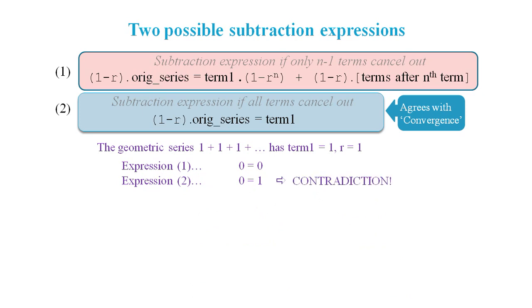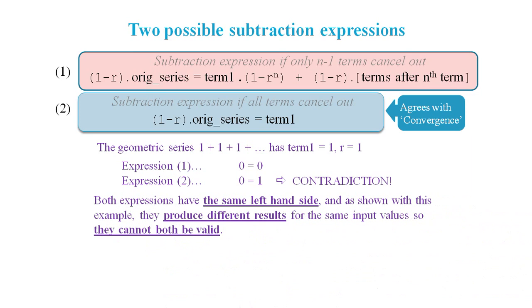Expression 2 reduces to 0 equals 1. This is a clear contradiction. If we examine the two expressions, they both have the same left hand side, and they both produce different results for the same input values, so they cannot both be valid.